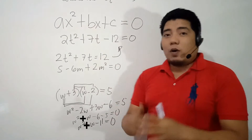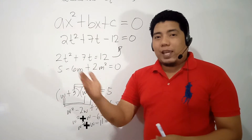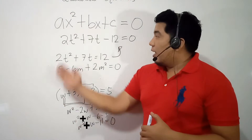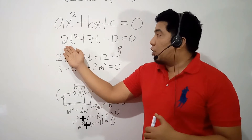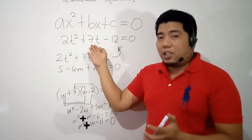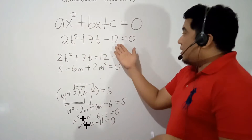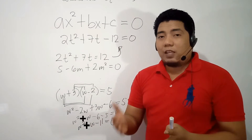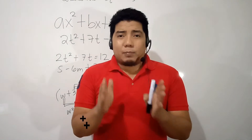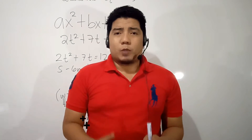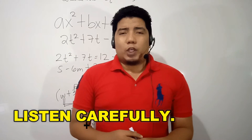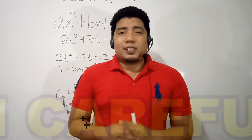Now, if you are asked to name A, B, and C: A is the numerical coefficient of the quadratic term, so that's 2. B is the numerical coefficient of the linear term, which is 7. And C is the constant term — the number without any variables — so we have negative 12. A word of advice: do not name A, B, and C if your quadratic equation is not yet in its standard form.